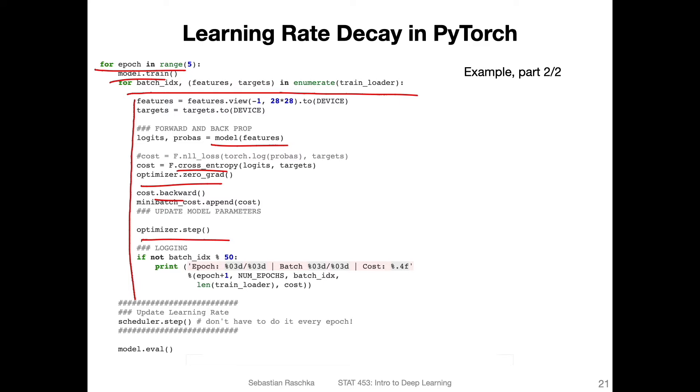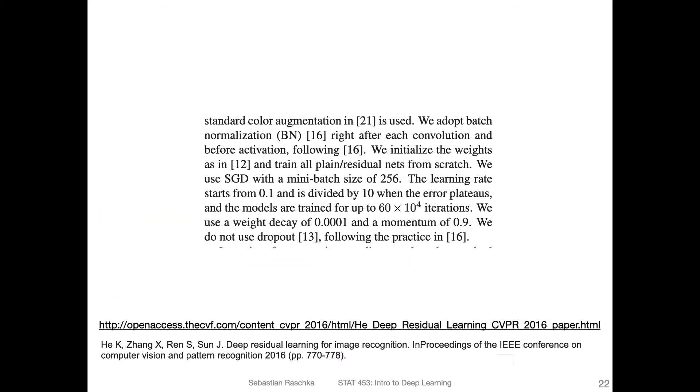And then I'm going to do backpropagation. So here, this is applying the gradient. So backward will compute the gradients, here we are doing the gradient update. Here's some logging. And then notice after the epoch, that's where we call the scheduler.step. But you can also actually put it up here if you want to. So it doesn't really matter.